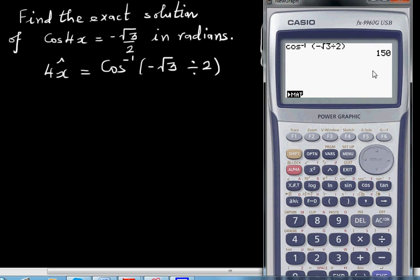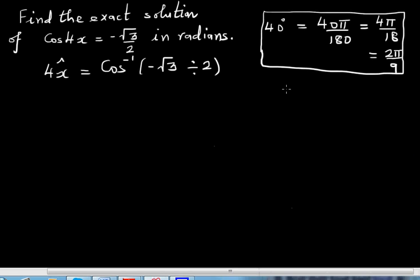That's 150 degrees. To write 150 degrees in radians, it's 150 pi over 180. Let's divide both by 10, which is 15 pi over 18.